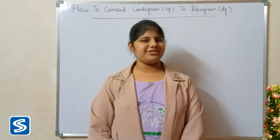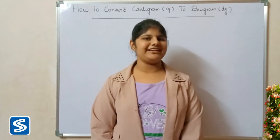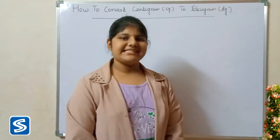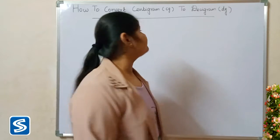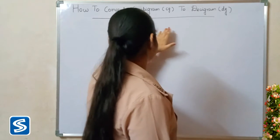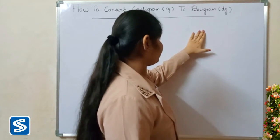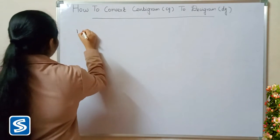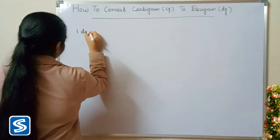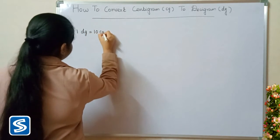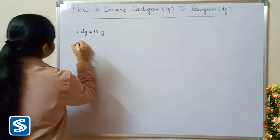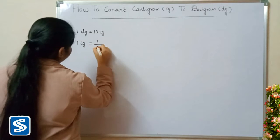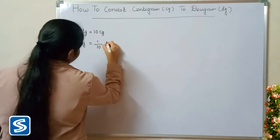Hi friends, welcome to Samish channel. In this video I am going to teach how to convert centigram into decigram. Centigram and decigram are the units of weight. The short form of centigram is CG and the short form of decigram is DG. We already know that 1 decigram is equal to 10 centigrams, so 1 centigram is equal to 1 by 10 decigrams.